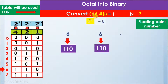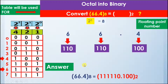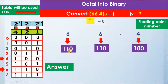The decimal point comes here. Then we get the digit 4, and we find its value in the table. The binary value of 4 is 1 0 0, so we write 4 as 1 0 0. Now we have calculated all the values.